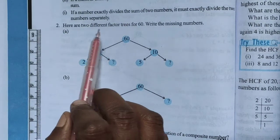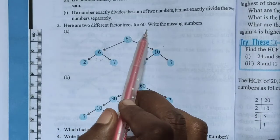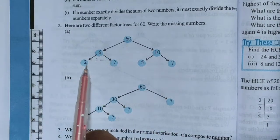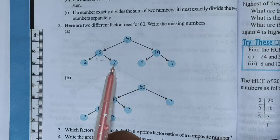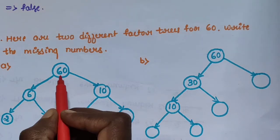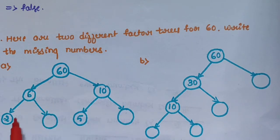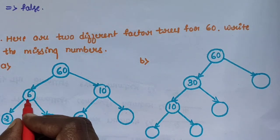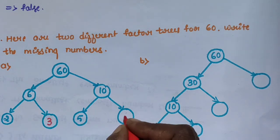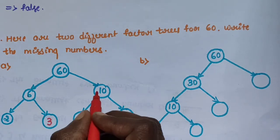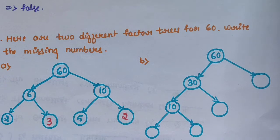Question number 2: here are two different factor trees for 60 — write the missing numbers. Sub-question A: 60 splits into 6 and 10; 6 = 2 × 3, and 10 = 5 × 2. The missing numbers in the factor tree are 3 and 2.